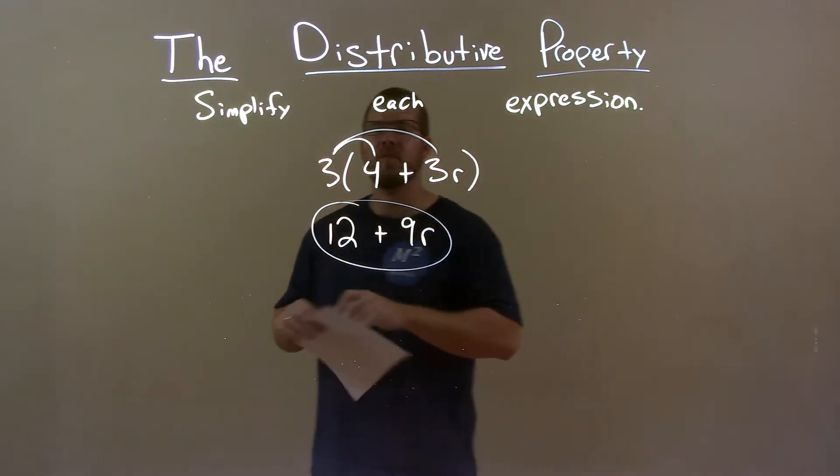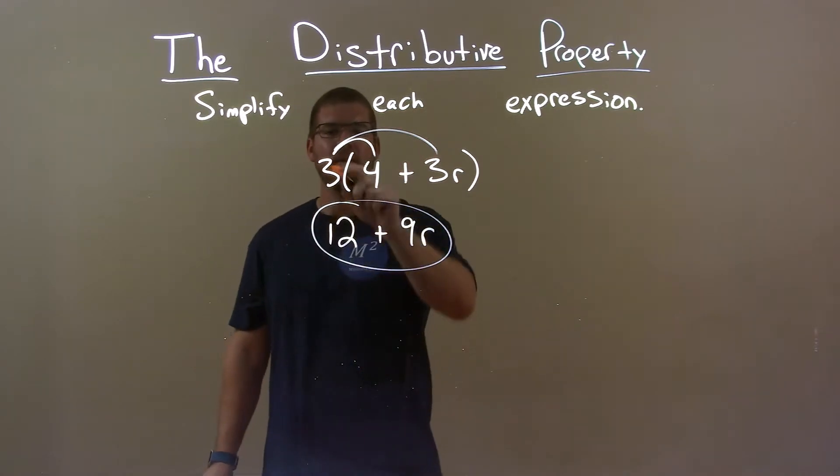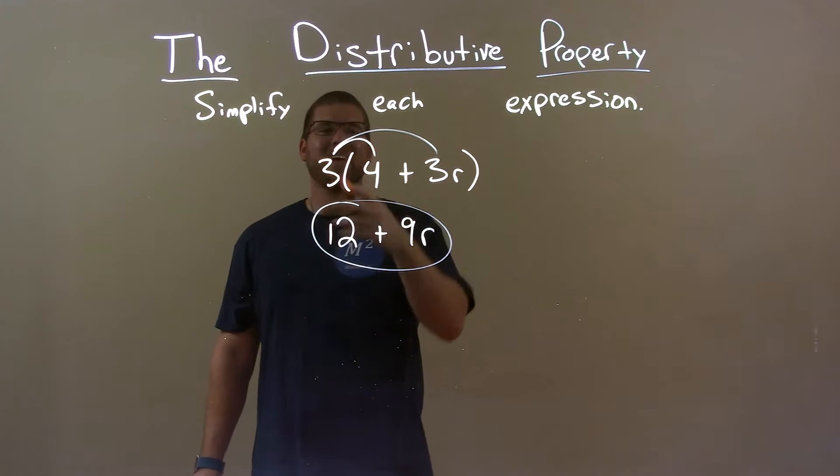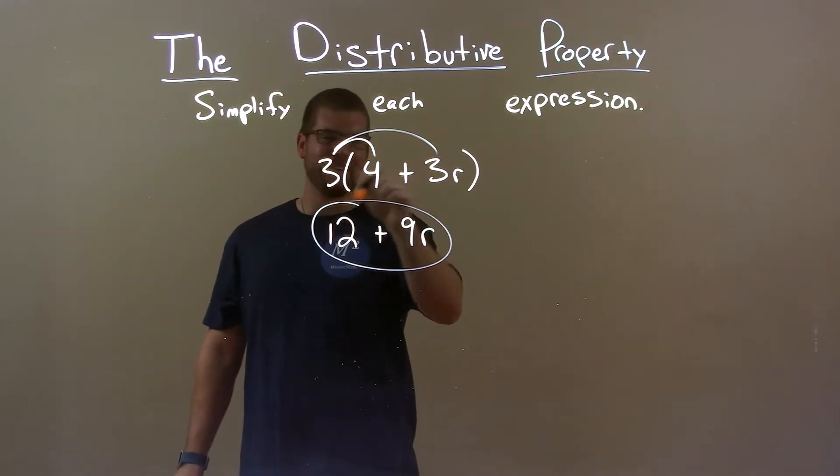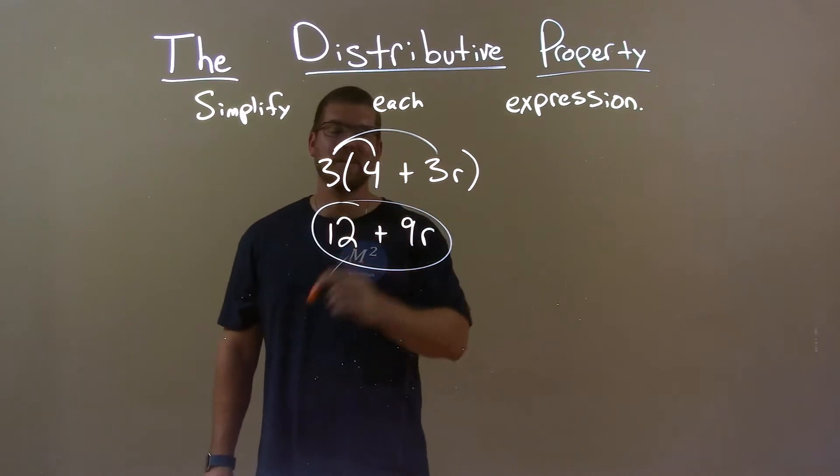Quick recap, we're given 3 times 4 plus 3r, and we have to simplify that. Well, I distributed, or multiplied the 3 to both parts there, and got our final answer of 12 plus 9r.